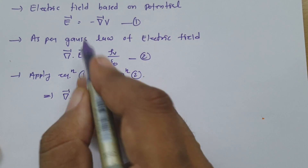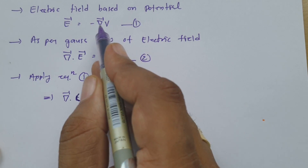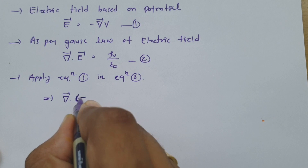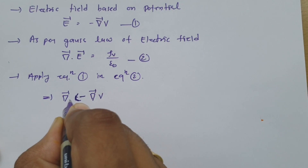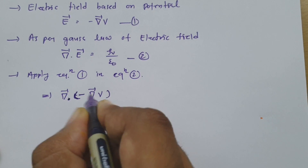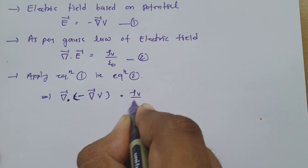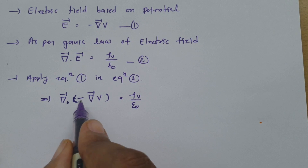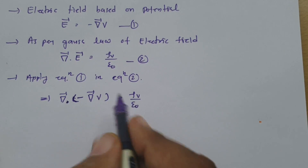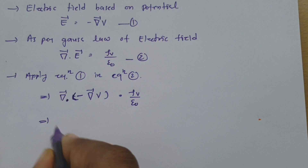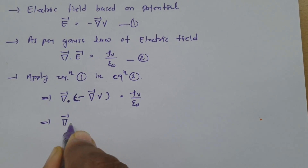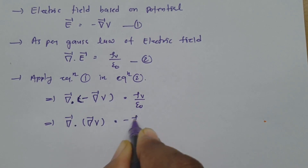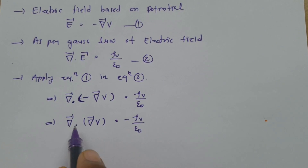See, del dot E — where E is the negative of the gradient of potential — so del dot (minus del V) equals rho V by epsilon 0. Simplifying, taking the negative sign to the other side, we get: del dot del V equals minus rho V by epsilon 0.